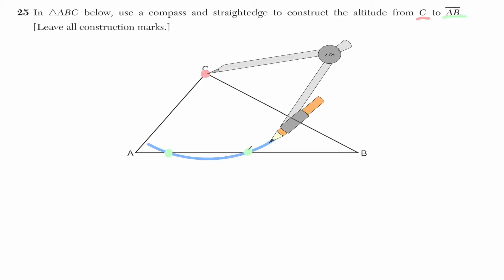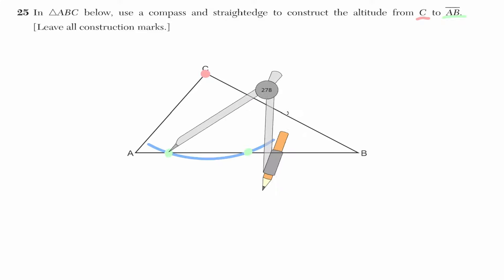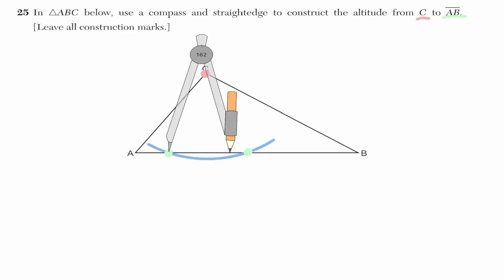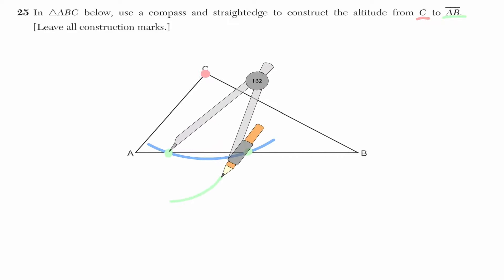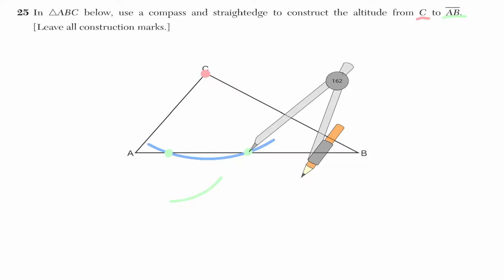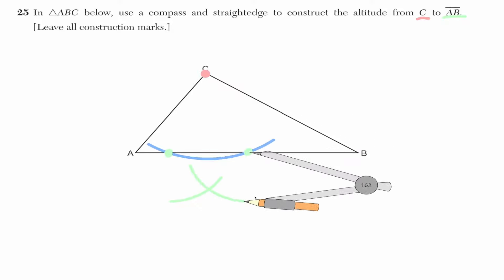Now we're halfway done. We get our compass and place it at one of those green intersections. Let me measure the full length between those two intersections — I want more than half the distance between them. With this measurement, let me move my compass and perform an arc below. Let me do the same from the other intersection, keeping the compass length the same, and find where it intersects the previous mark.